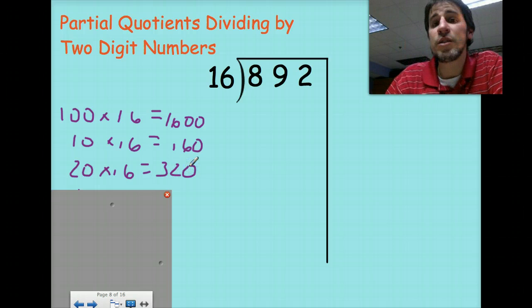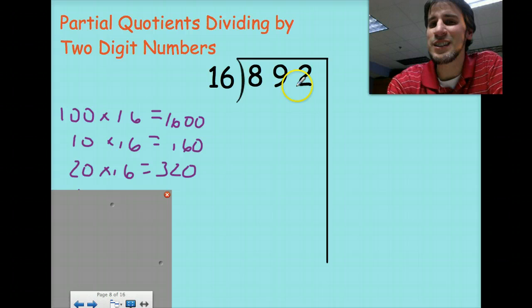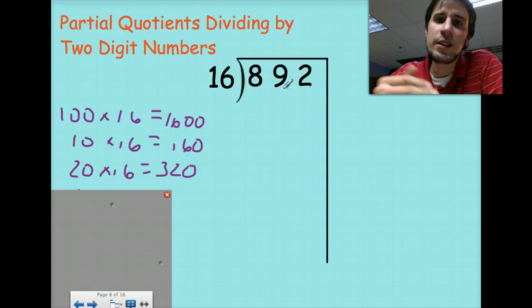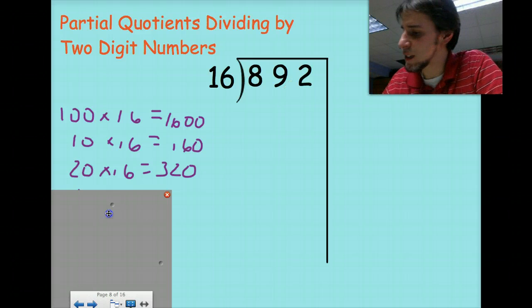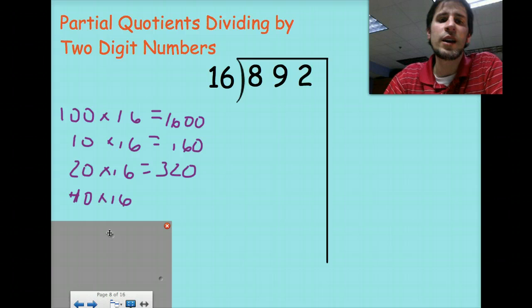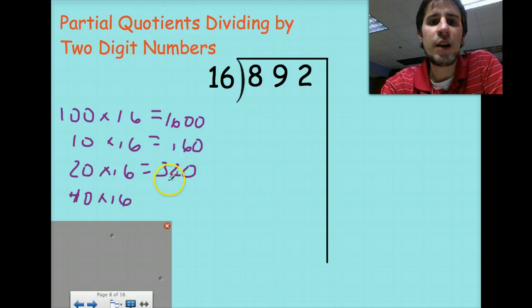Bring that zero back there. Three hundred twenty, we're getting closer to this eight hundred and ninety-two. Well guess what, if you can double ten, why not double twenty, make it nice and easy on you. Try that forty times sixteen. Well double this.